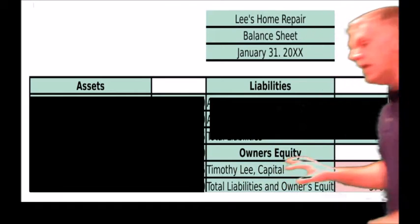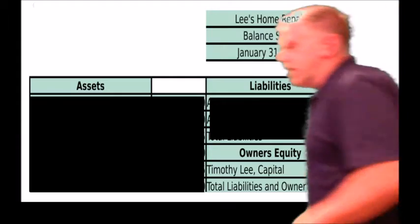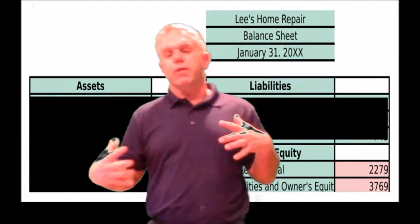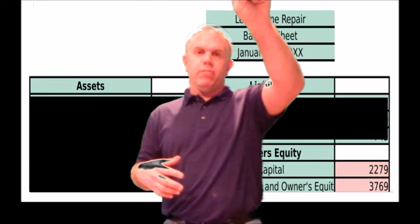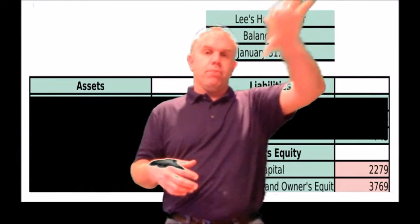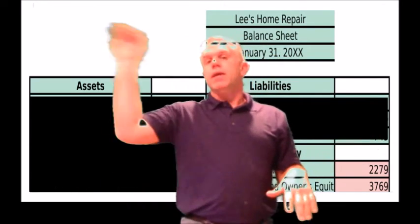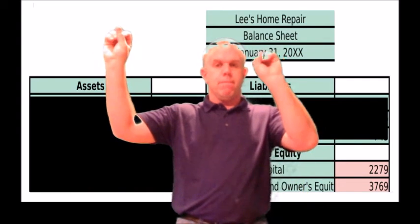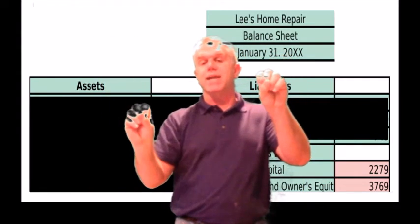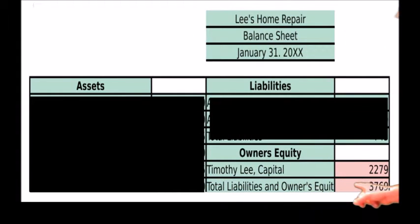Why are these turning red? These are turning red because the individual just used the capital number from the trial balance. Remember, the capital number on the balance sheet is the capital from the trial balance minus drawing plus net income, if there is a net income. If there's no net income, it's capital minus drawing minus net loss. That gives you the updated capital number, such as the 2279 shown here.